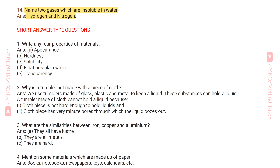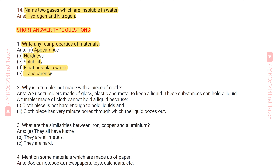We have completed very short answer type questions. Now let's proceed to short answer type questions. Question 1: Write any four properties of materials. Answer: a) Appearance, b) Hardness, c) Solubility, d) Float or sink in water, e) Transparency. You can write any four properties from the given list. Question 2: Why is a tumbler not made with a piece of cloth?